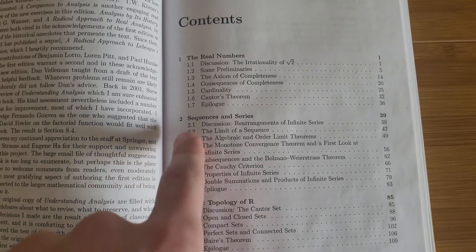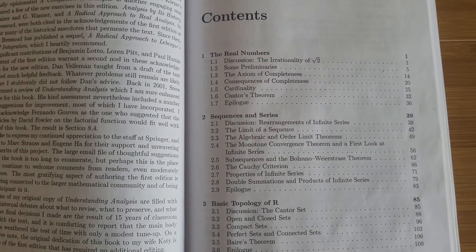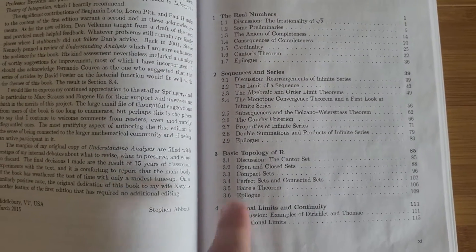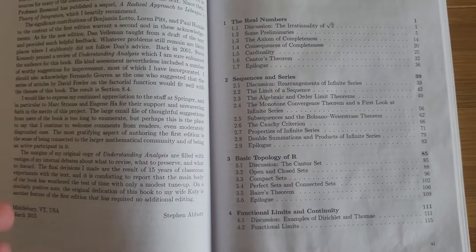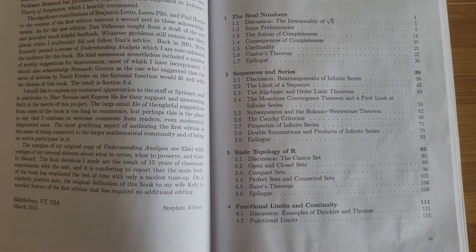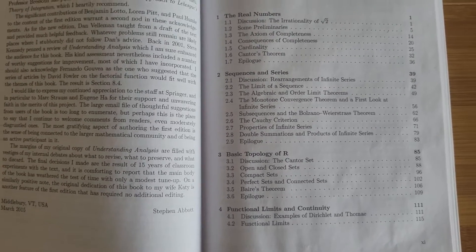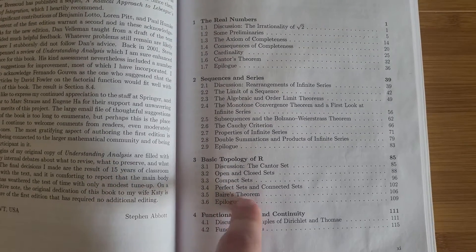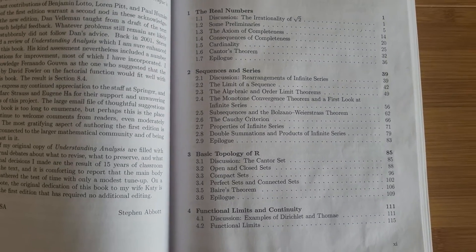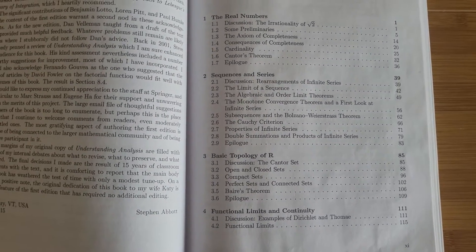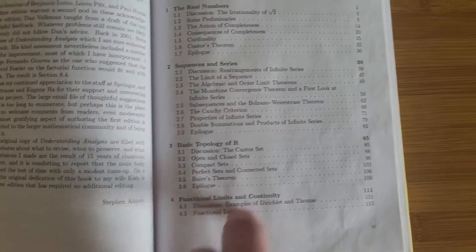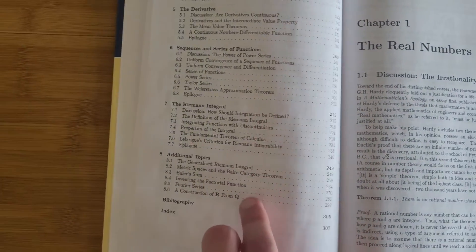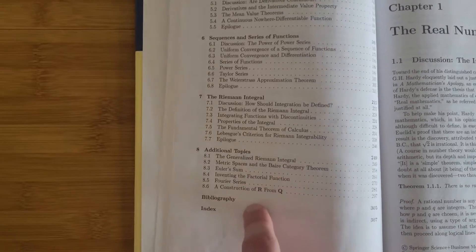From the second chapter onwards, familiar concepts from single variable calculus begin to appear. We start with sequences and series, then basic topology of R. The preface tells you the necessary subsections are 3.2 and 3.3, while 3.4 and 3.5 on perfect sets, connected sets, and Baire's theorem aren't discussed much. Chapter four covers limits and continuity, followed by the derivative, sequences and series of functions, the Riemann integral, and additional topics.